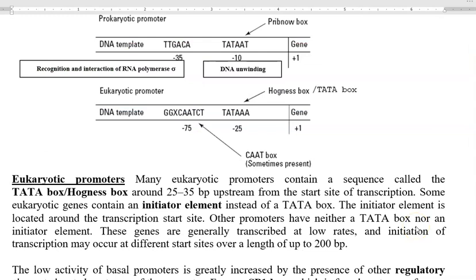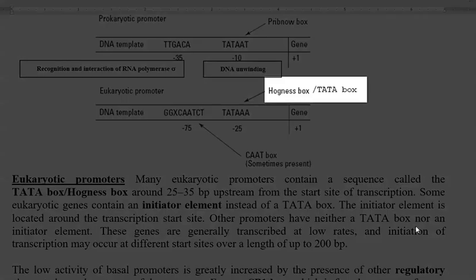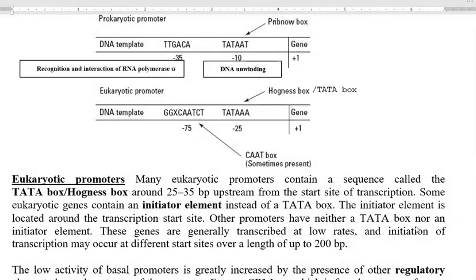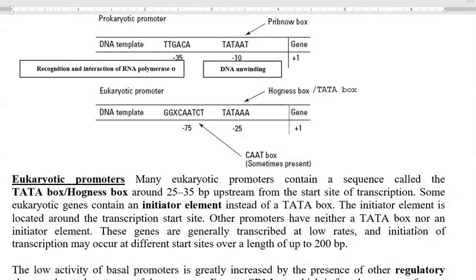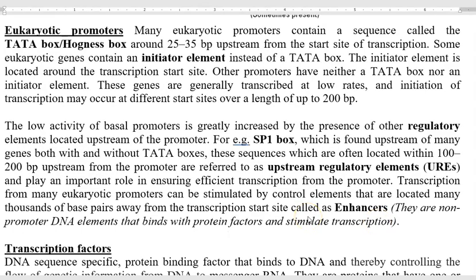Now we look at the eukaryotic promoter, which is referred to as the TATA box or Hogness box. Many eukaryotic promoters contain a sequence called TATA, which is why it is referred to as the TATA box. This promoter is located around 25 to 35 base pairs upstream from the transcription start site, and it is the region where RNA polymerase will be binding. Some eukaryotic genes contain an initiator element instead of the TATA box.